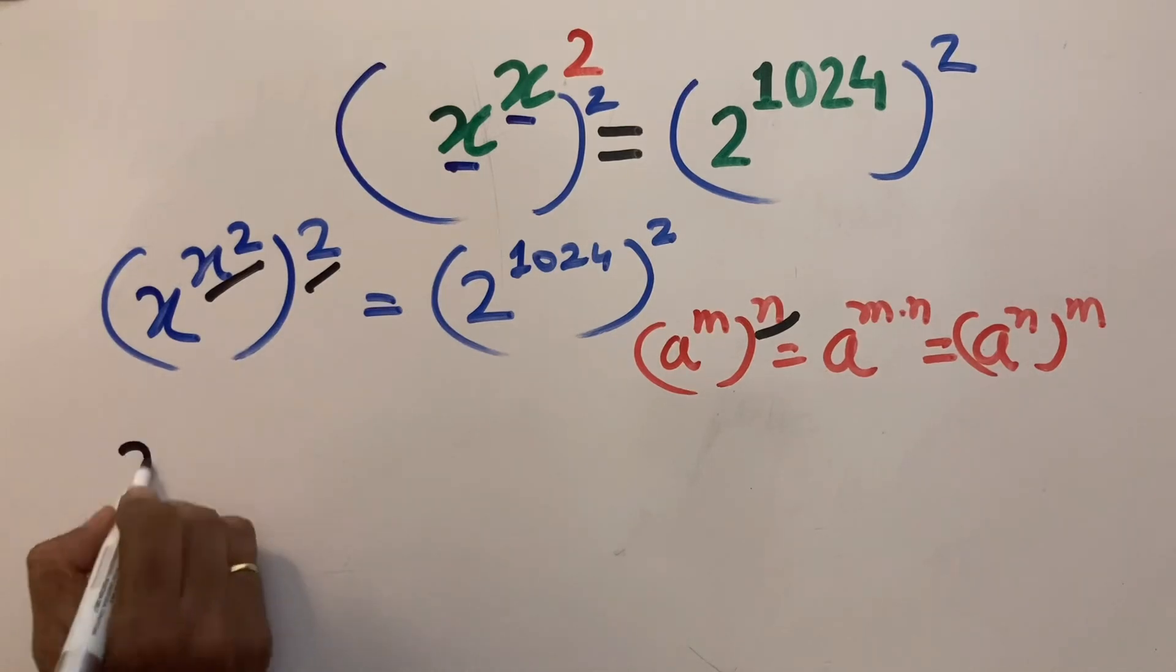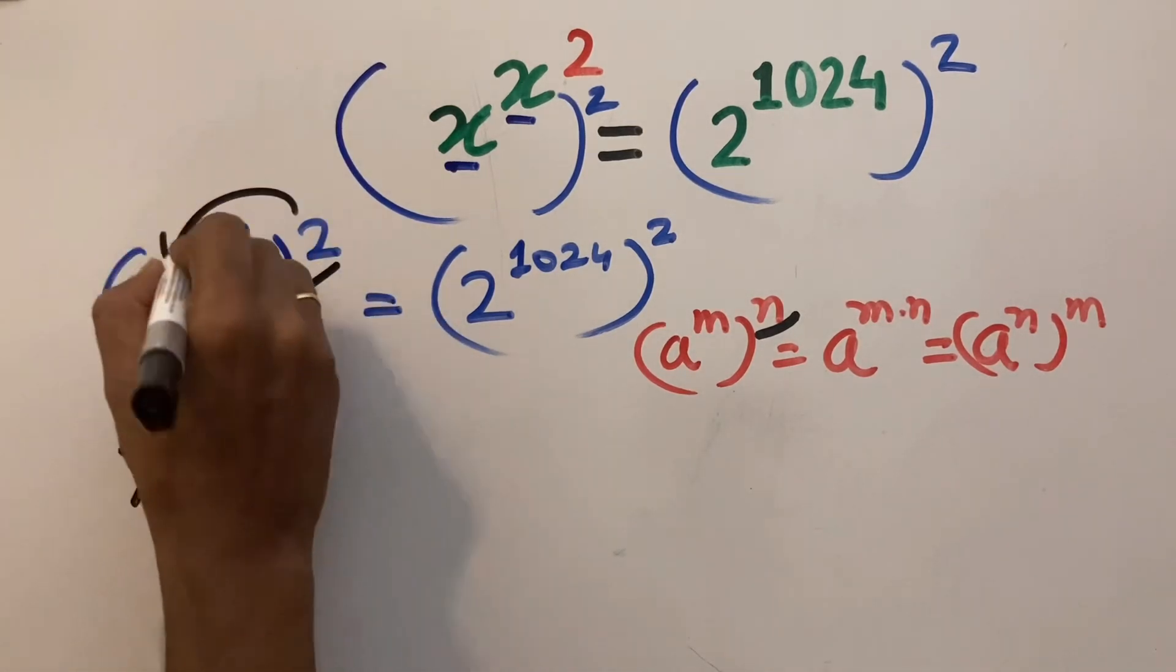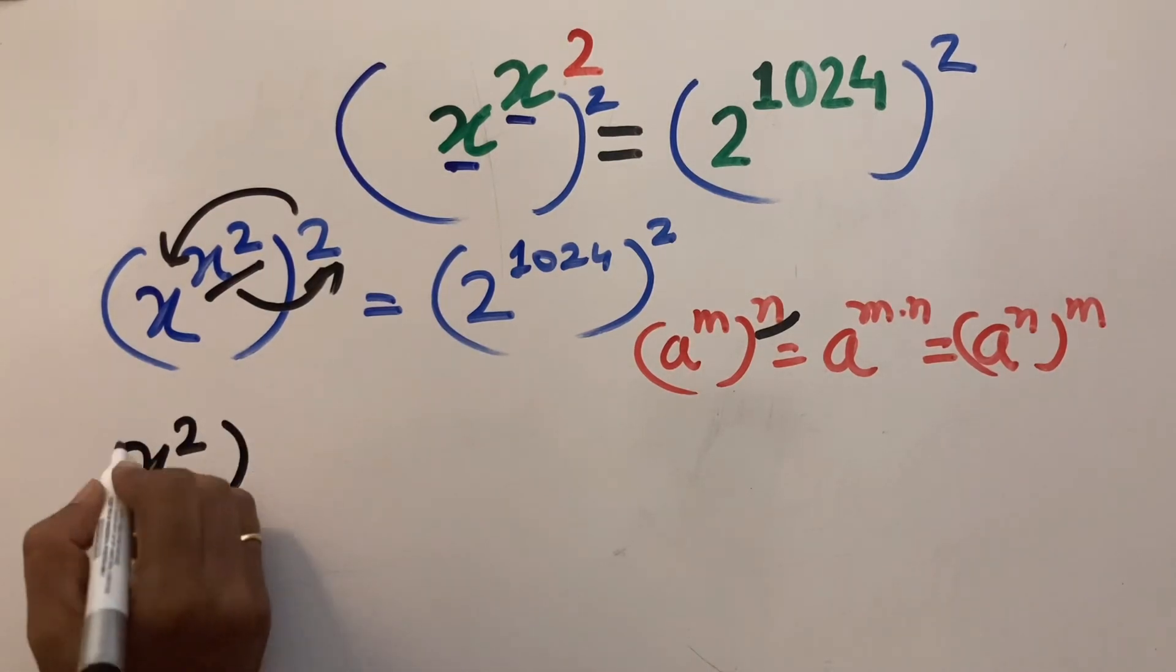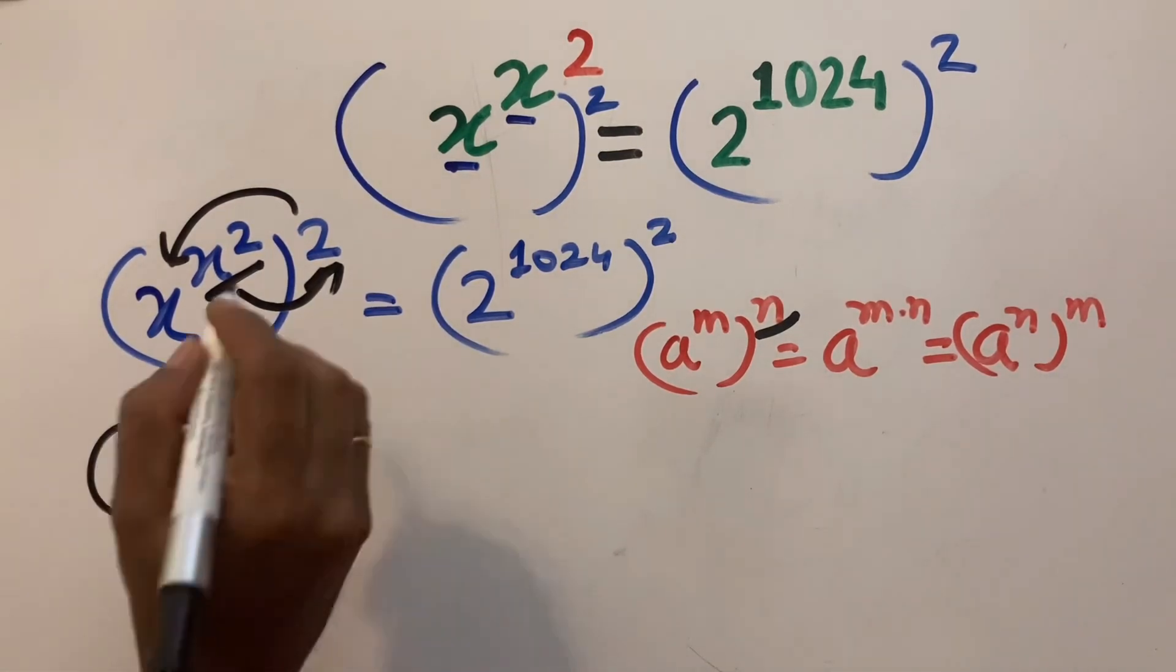So rearranging, x to the power 2 comes here, x squared goes here. This is x to the power 2 to the power x squared.